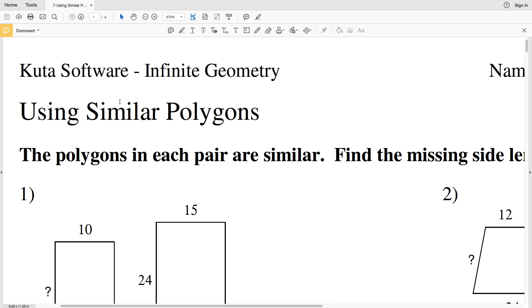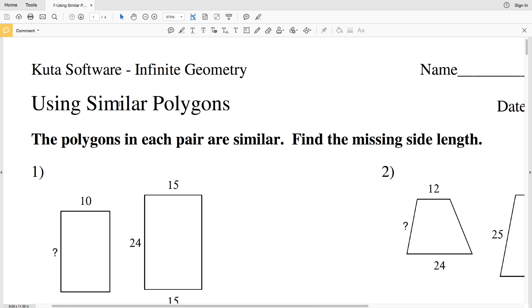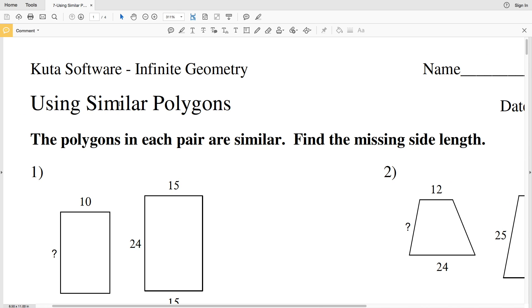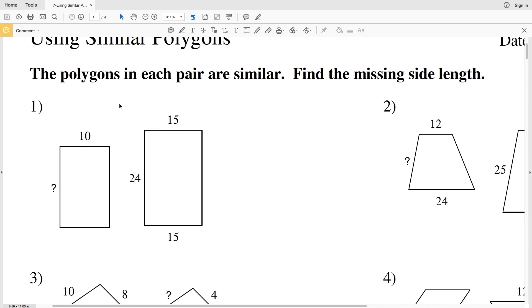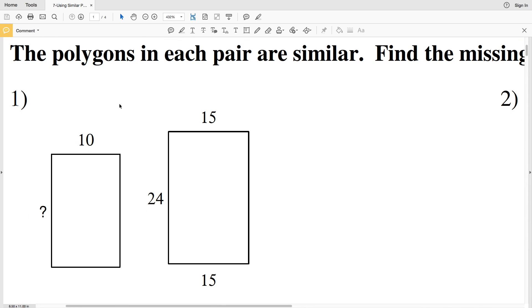In this video we're going to start the CUDA software infinite geometry free worksheet using similar polygons. Our directions are that the polygons in each pair are similar, so we're to find the missing side lengths. Remember, similar polygons have proportional sides.